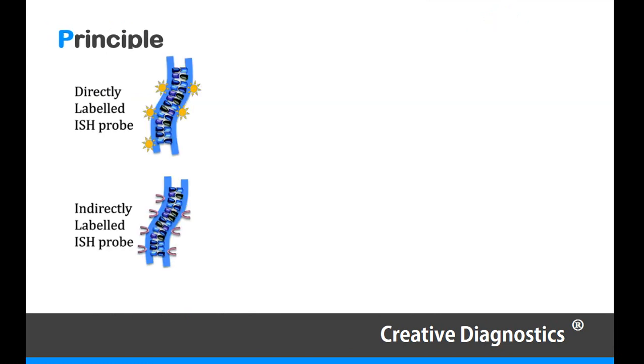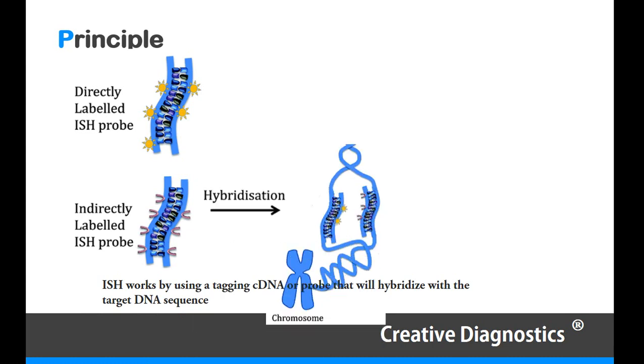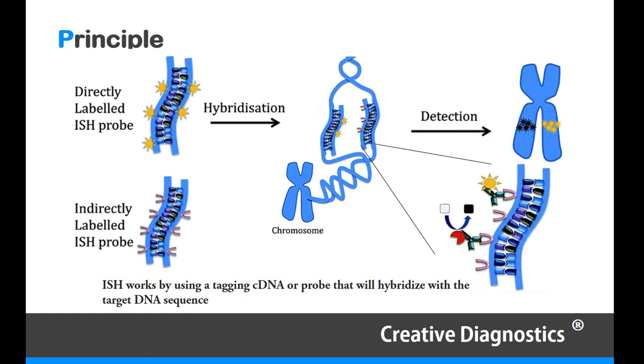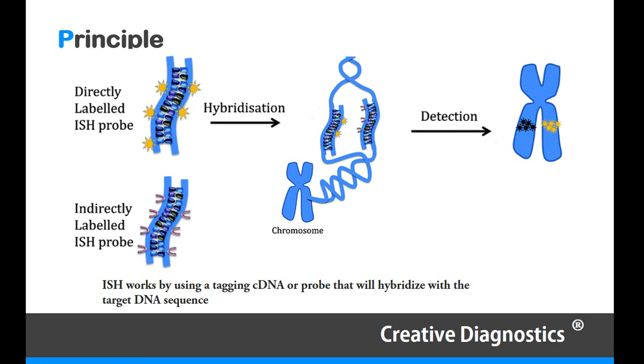ISH works by using a tagging cDNA probe that will hybridize with the target DNA sequence. The basic principles for FISH and all other methods of in-situ hybridization are the same, except one is utilizing a fluorescence probe to detect specific nucleotide sequences within cells and tissues.